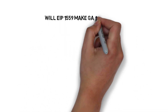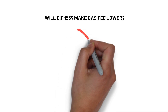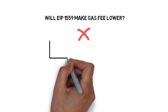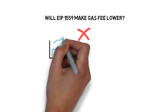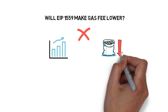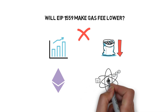So will EIP-1559 make gas fees much lower? Not really. It will clearly optimize the fee model by smoothing fee spikes and limiting the number of overpaid transactions, but the main ways of lowering gas fees are still ETH 2.0 and layer 2 scaling solutions.